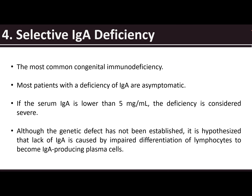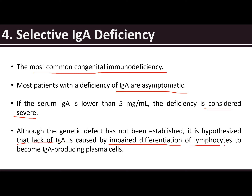Selective IgA deficiency — take note that this is the most common congenital immunodeficiency. Most patients with the deficiency of IgA are most of the time asymptomatic. If the serum IgA is lower than 5 mg/mL, the deficiency is considered severe.